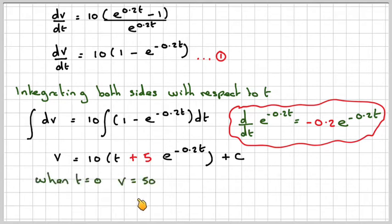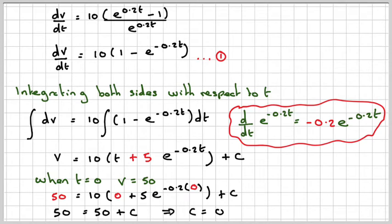Now when t is 0, v is 50. So we'll substitute that in. So we'll get 50 is 10 times 0 plus 5 times e to the 0. Now e to the 0 is 1. So we're just going to get 5. So it's going to give me 50 is equal to 5 plus c. Therefore c is equal to 0. So therefore I now get v is 10 times t plus 5e to the minus 0.2t.